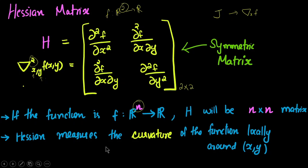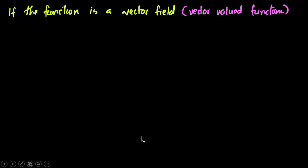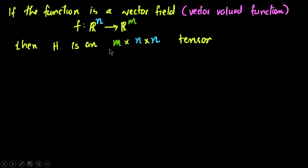The Jacobian gives the slope of a function at a particular point, while the Hessian gives the curvature at that point. If the function is vector-valued — mapping from Rⁿ to Rᵐ, meaning m-dimensional output and n-dimensional input — then the Hessian will be an m×n×n matrix. We call such a structure a tensor, which is simply a multi-dimensional matrix.